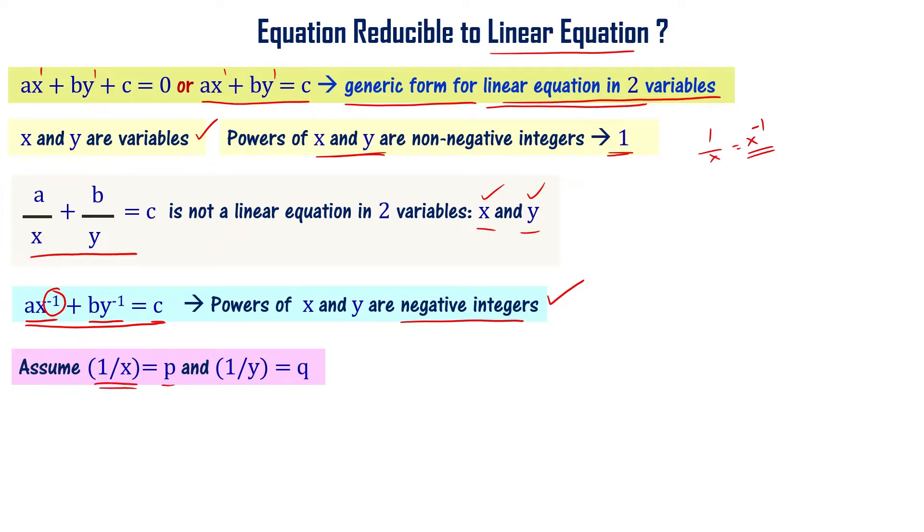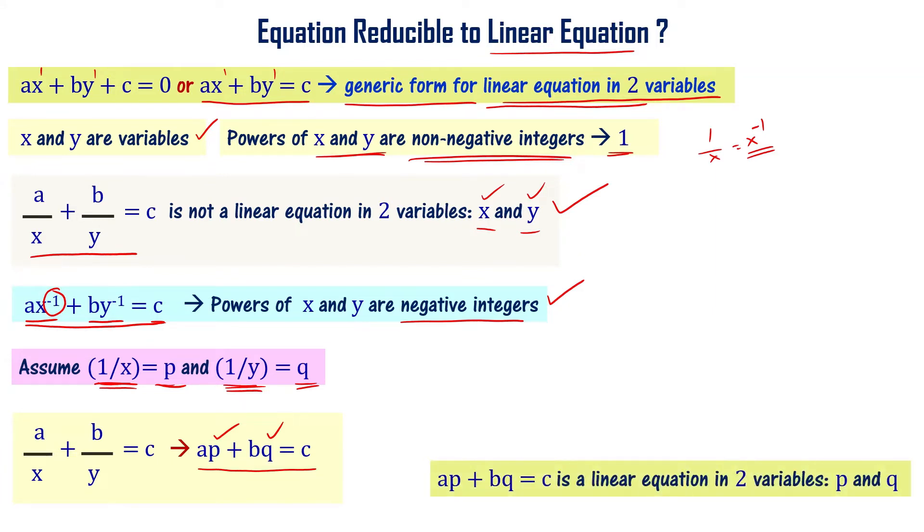Let's assume that 1 by x equal to p, and 1 by y equal to q. If we do that, the equation becomes ap plus bq equal to c. Writing p instead of 1 by x and q instead of 1 by y, our non-linear equation becomes ap plus bq equal to c. This equation has two variables p and q, but powers are 1, a non-negative integer. So, this particular equation ap plus bq equal to c, it is a linear equation. Why is it a linear equation? It is having degree 1, p power 1, q power 1. The highest degree of any term is 1. Therefore, it is a linear equation in two variables p and q.